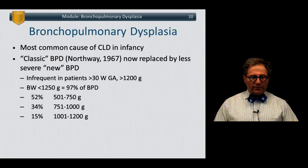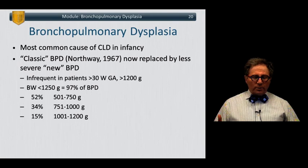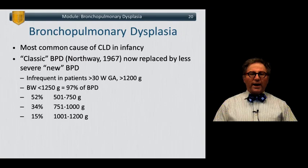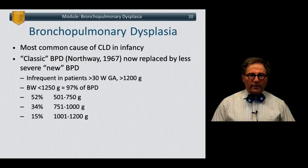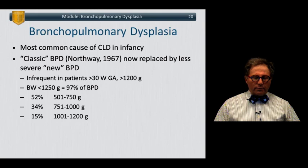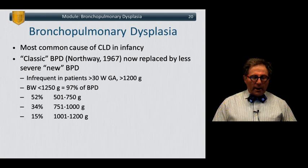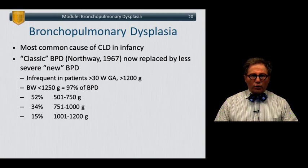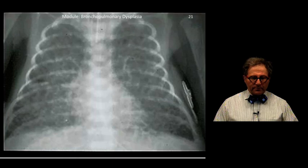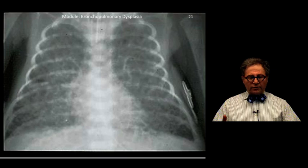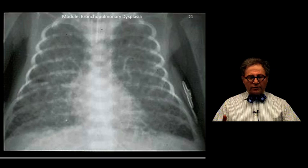Bronchopulmonary dysplasia is the most common cause of chronic lung disease in infancy. The original description by Northway some 50 years ago has now been replaced by a less severe new form of bronchopulmonary dysplasia. BPD is infrequent in infants more than 30 weeks gestational age and more than 1,200 grams in weight. Virtually all cases now appear in infants less than 1,250 grams at birth, with half of them occurring in infants less than 750 grams.